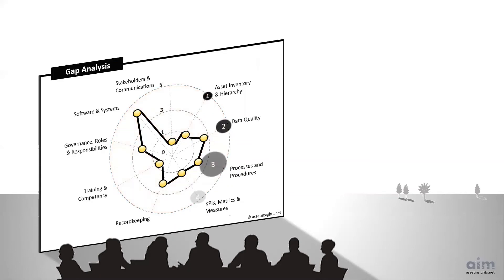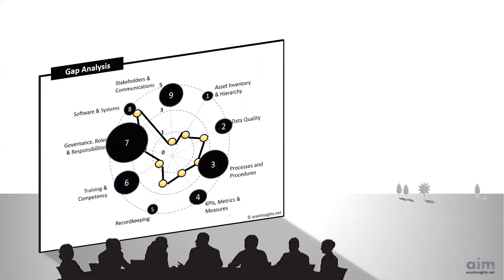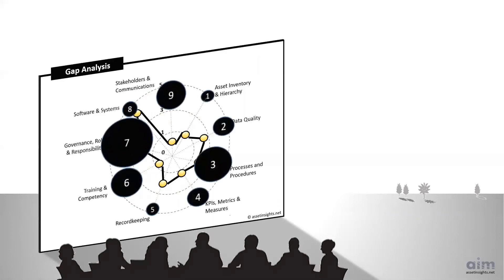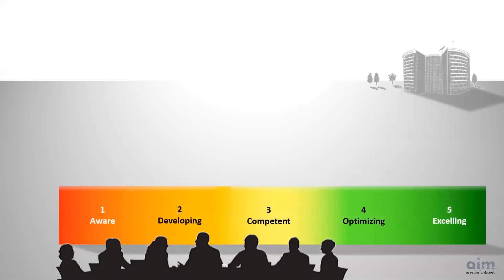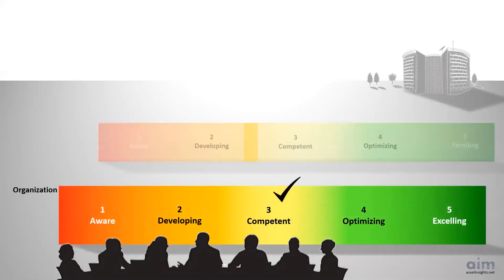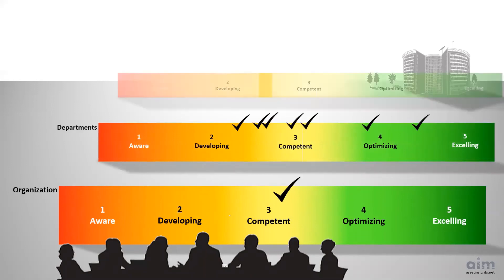Weightings can be applied to the scores if required. The weighted profile assists in prioritizing the initiatives that will be developed to close each gap. The gap analysis culminates in an overall organization score, which is derived from the individual department scores, and these in turn are derived from the many attribute scores measured against the best practices.